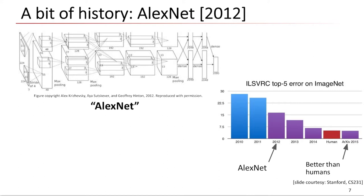More recently, AlexNet in 2012 was the first major success of the convolutional neural network. After this paper, almost every paper used deep convolutional neural networks. The performance gain was really large compared to previous methods. By 2015, one paper even outperformed human performance, and now in 2020 there are many papers that surpass that too.